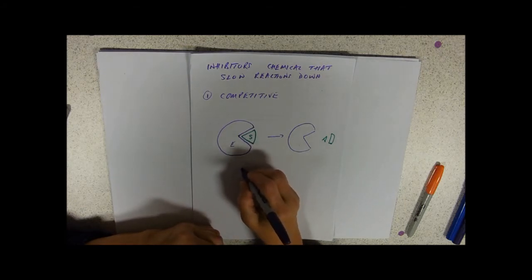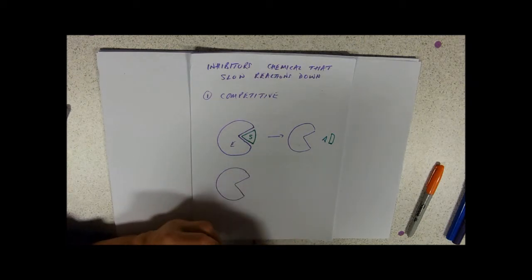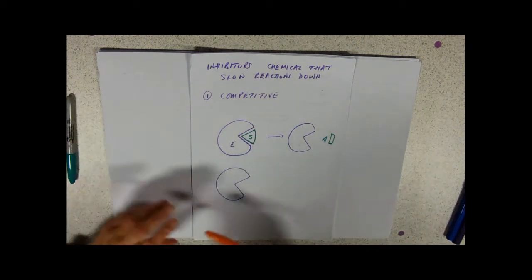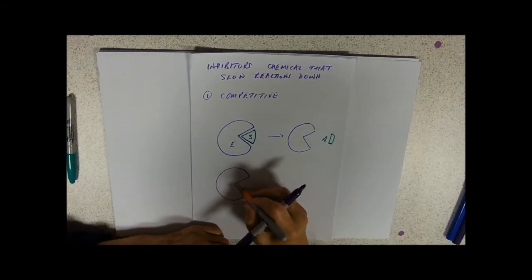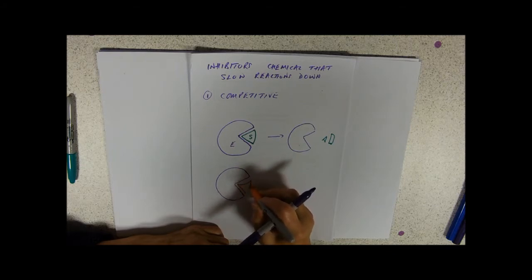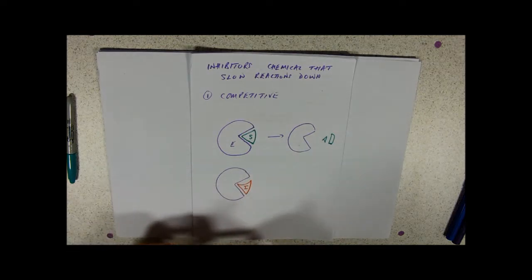A competitive inhibitor is so called because it competes with the substrate for the active site. And that means that it will kind of fit into the active site. So if you imagine something that perhaps looked a bit like that, it's not the same shape, but it's similar enough that it will fit in.